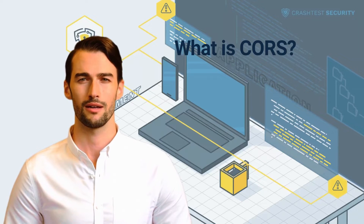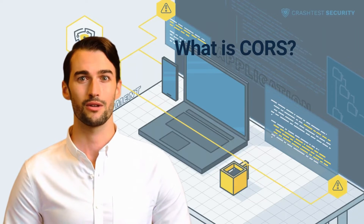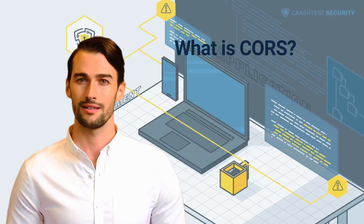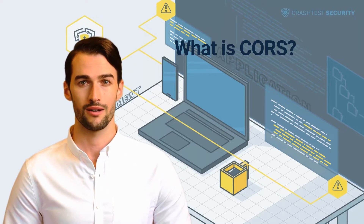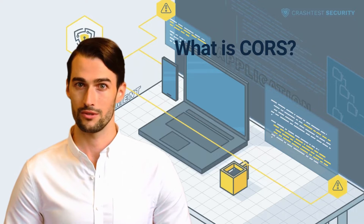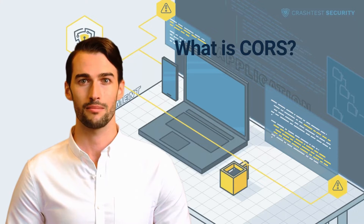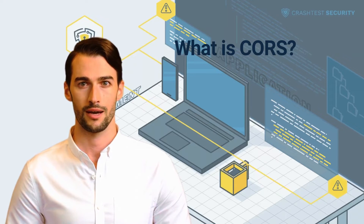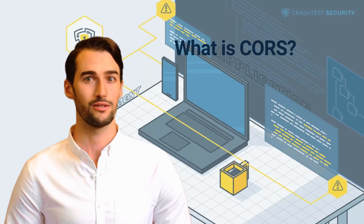Cross-origin resource sharing is a header-based mechanism that specifies how web browsers and servers can interact and determine the safety of cross-origin HTTP requests and data transfers. Origin, in this case, includes both the port, hostname, and scheme associated with a request. CORS allows or disallows access to resources outside of a domain from which resources were initially provided, depending on the setup. CORS is a way of relaxing the same-origin policy to enable controlled access to one website domain from another via HTTP requests. This controlled access is achieved via HTTP headers and the instructions contained therein.